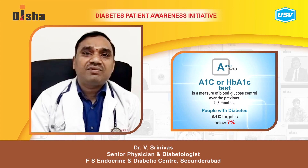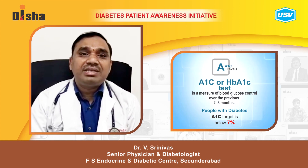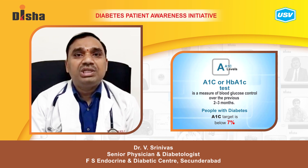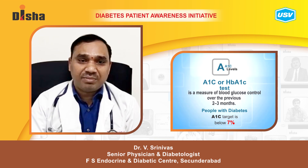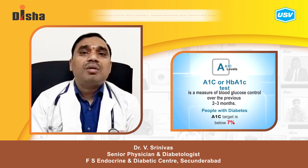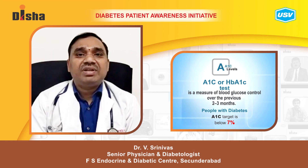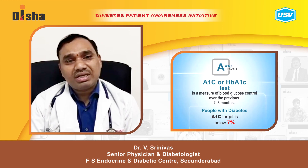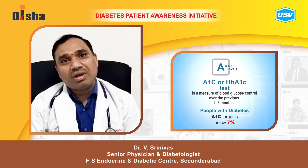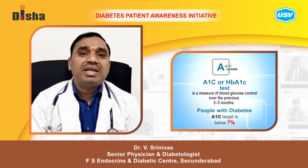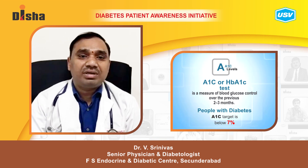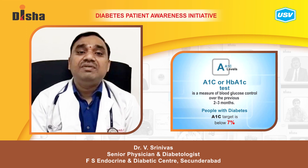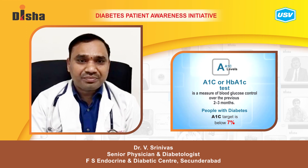HbA1c is the important parameter which tells us your overall control over the last three months. The normal target of HbA1c is 7 or less than 7. If you are elderly — age 70 or more — and have associated comorbidities, you can take it to 7.5 to 8. It has to be individualized, especially with elderly people.